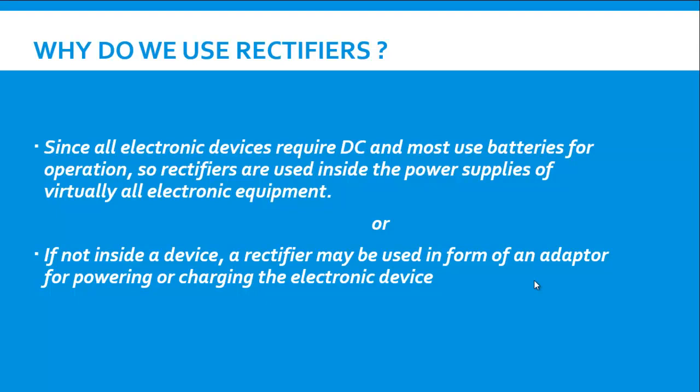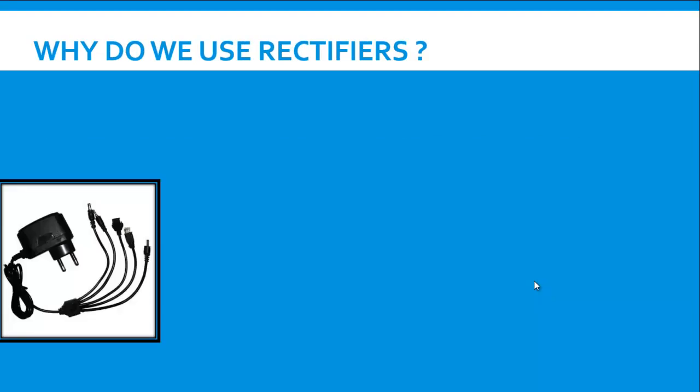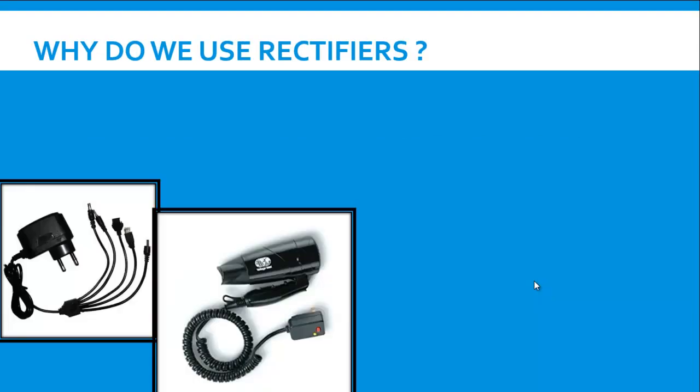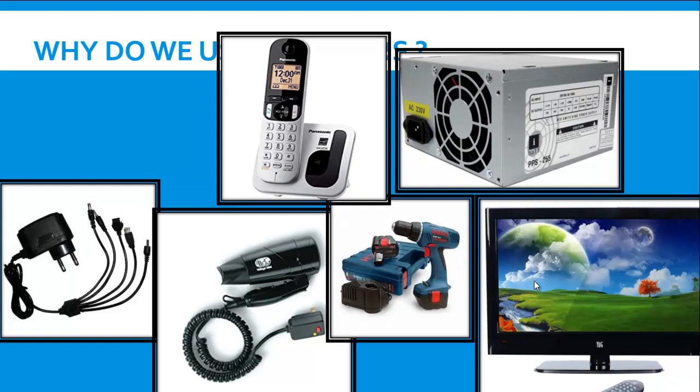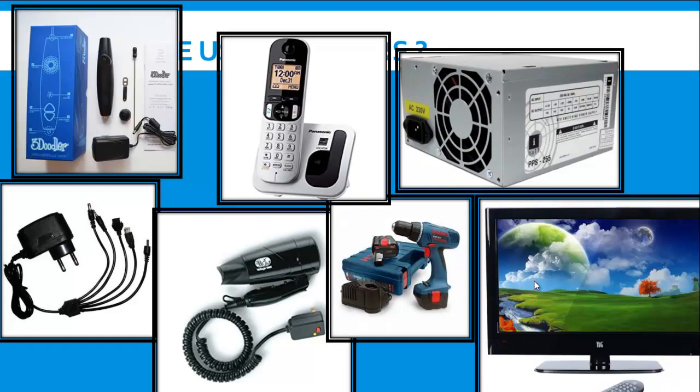This rectification process is required to be carried out. This rectification is carried out either inside the device or outside in form of an adapter which is used for powering or charging that particular electronic device which could be a mobile phone, a hair dryer, a telephone, a SMPS, a drilling machine, a monitor or a 3D doodler. All these devices utilize the process of rectification for their normal operation.